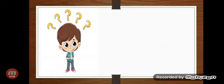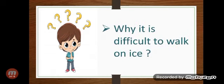Friction also helps us to walk. Friction between the ground and our shoes helps us to walk without slipping. But it is difficult to walk on a wet surface or ice because there is less friction between these surfaces and our shoes.